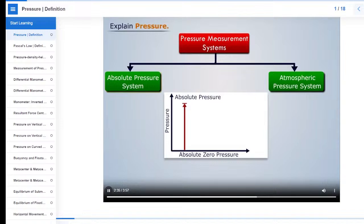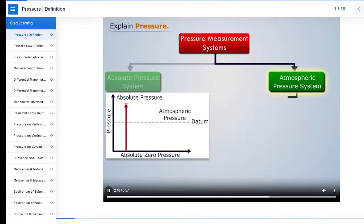In the atmospheric pressure system, the atmospheric pressure is taken as the datum. In this system, there are two types of pressure: gauge pressure and vacuum pressure.